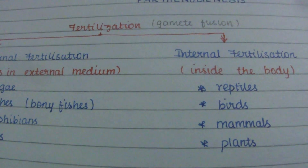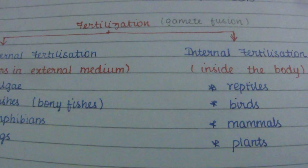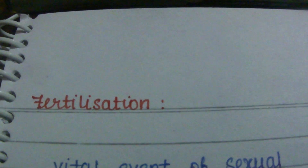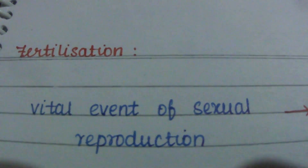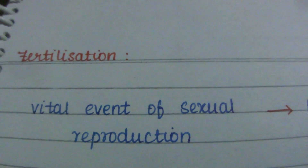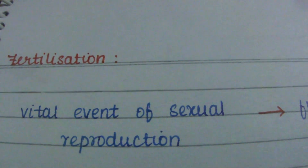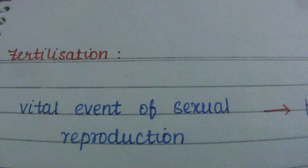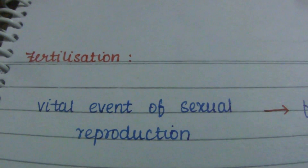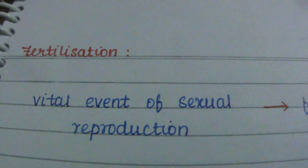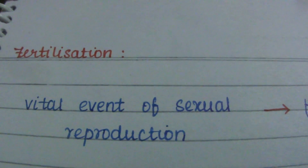In seed plants, fertilization occurs in a different way. The male gametes are non-motile and are carried to the egg by pollen tubes. The pollen grains are transported to the ovule through these pollen tubes.